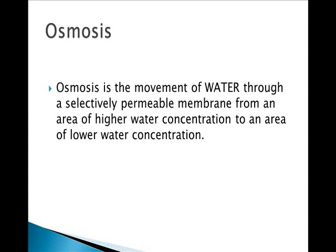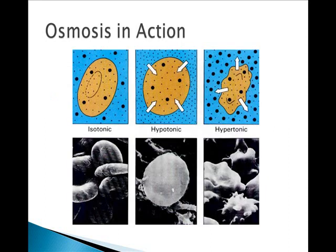Let's take a look at osmosis in action. When we talk about isotonic, hypotonic, and hypertonic solutions, we're usually talking about movement of water molecules across the cell membrane. In an isotonic solution, water is moving in and out at the same rate, so there's no net movement. This is a red blood cell shown in both a scanning electron micrograph and a diagram, displaying the normal biconcave disc shape.